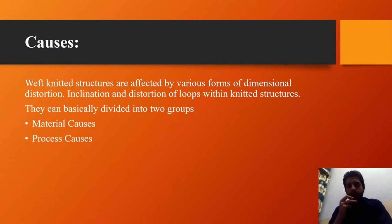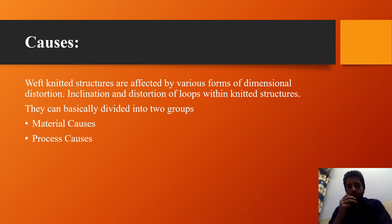Weft knitted structures are affected by various forms of dimensional distortion and inclination of loops within knitted structures. These causes can be divided into two groups: material causes and process causes. Causes of skewness have been thoroughly investigated, analyzed, and classified. One of the material causes is yarn-related, caused by residual torque in the yarn shown by its twist liveliness.